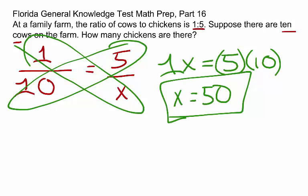So, it turns out that if the ratio of cows to chickens is 1 to 5, and we have 10 cows on the farm, then there must be 50 chickens.